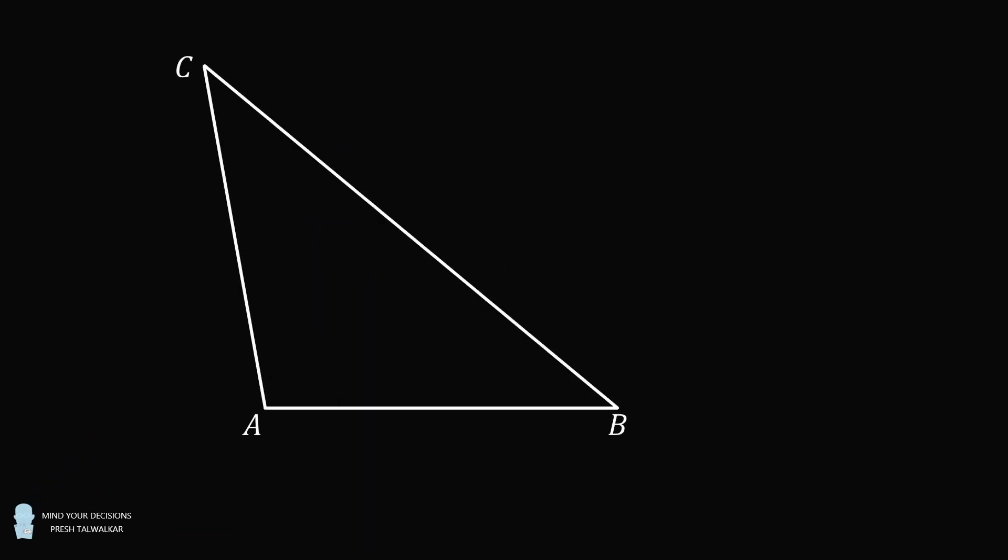Hey, this is Presh Talwalkar. Triangle ABC is an isosceles triangle with AB equal to AC and angle A equal to 100 degrees.